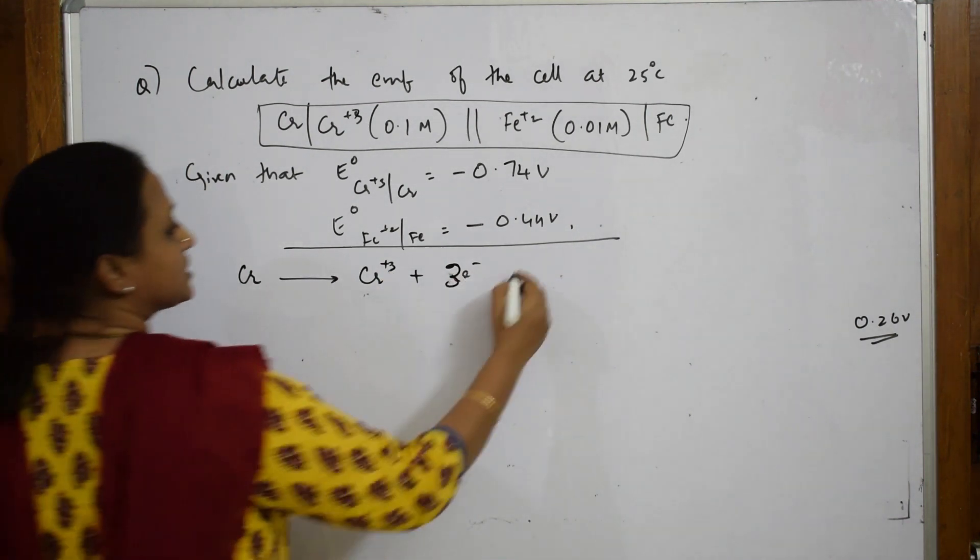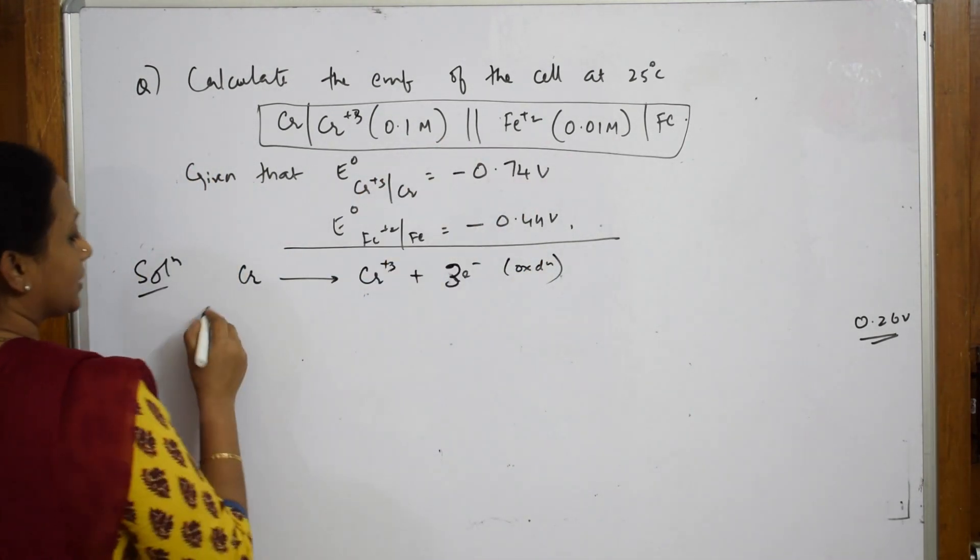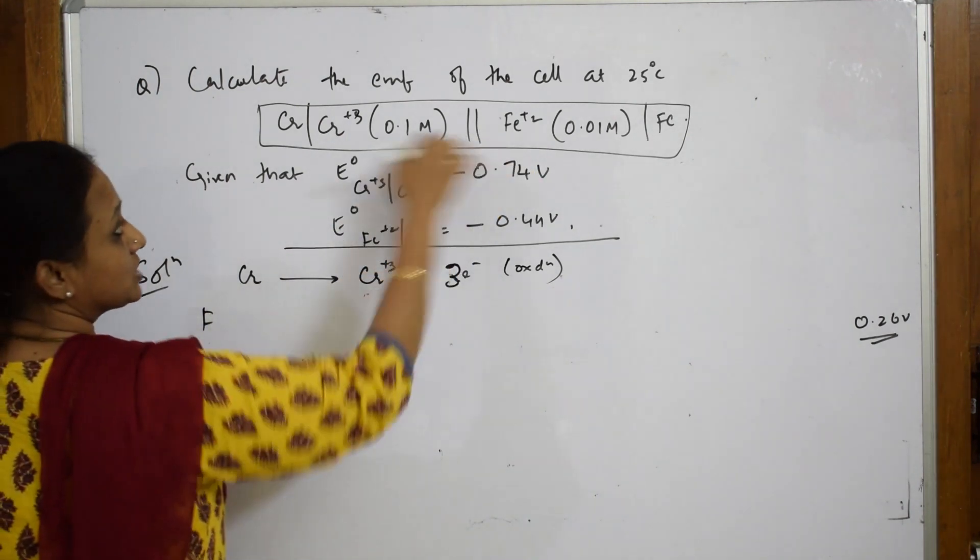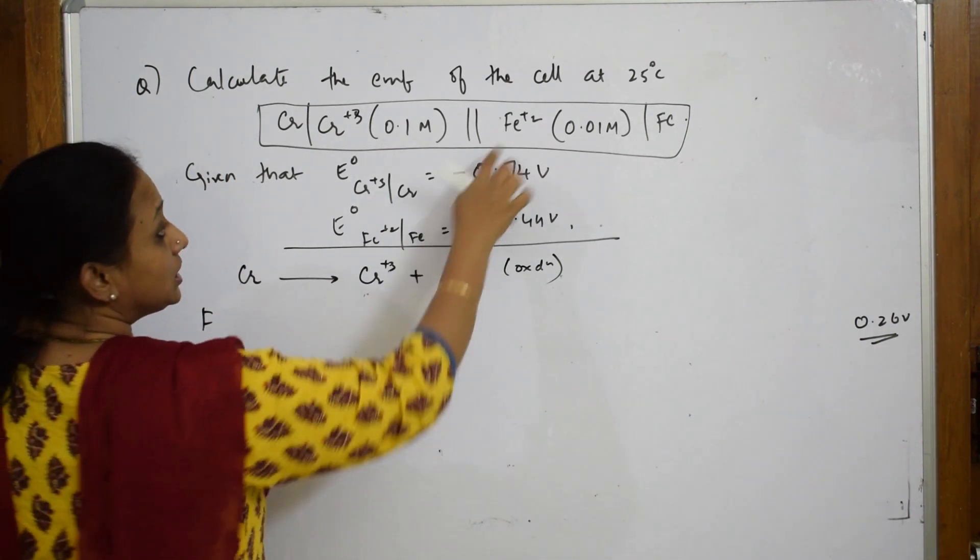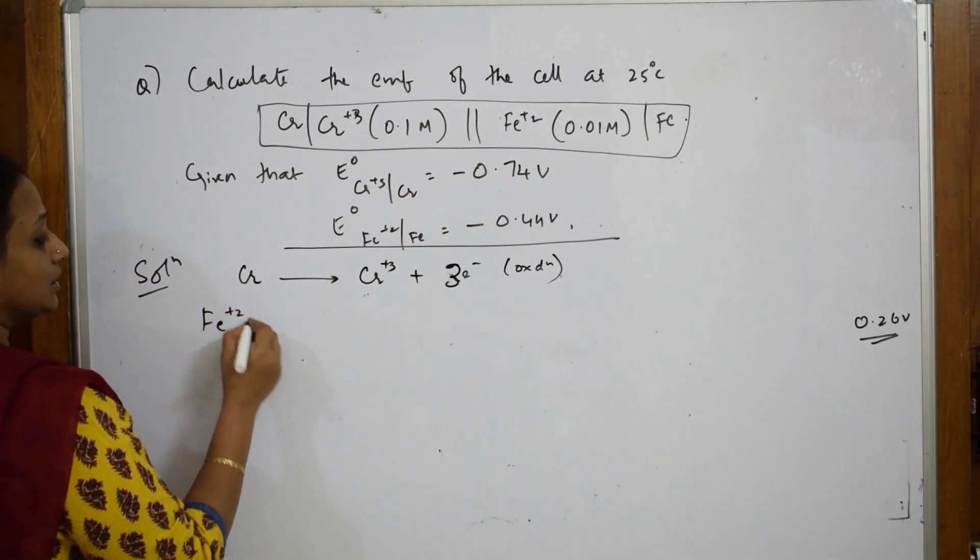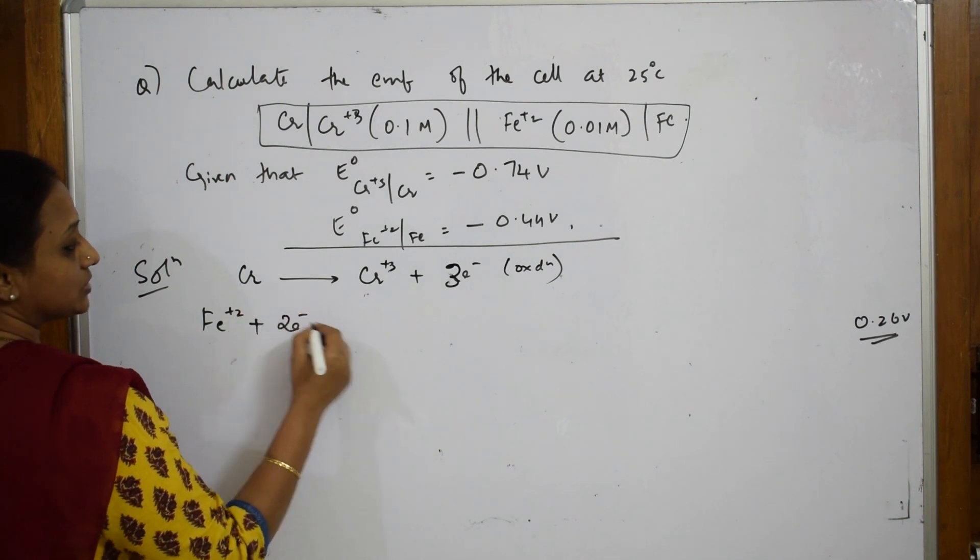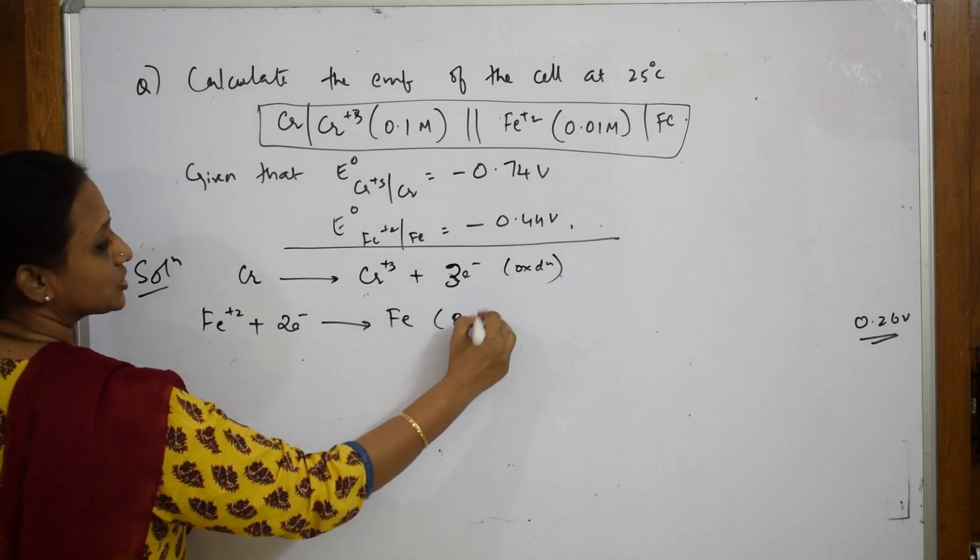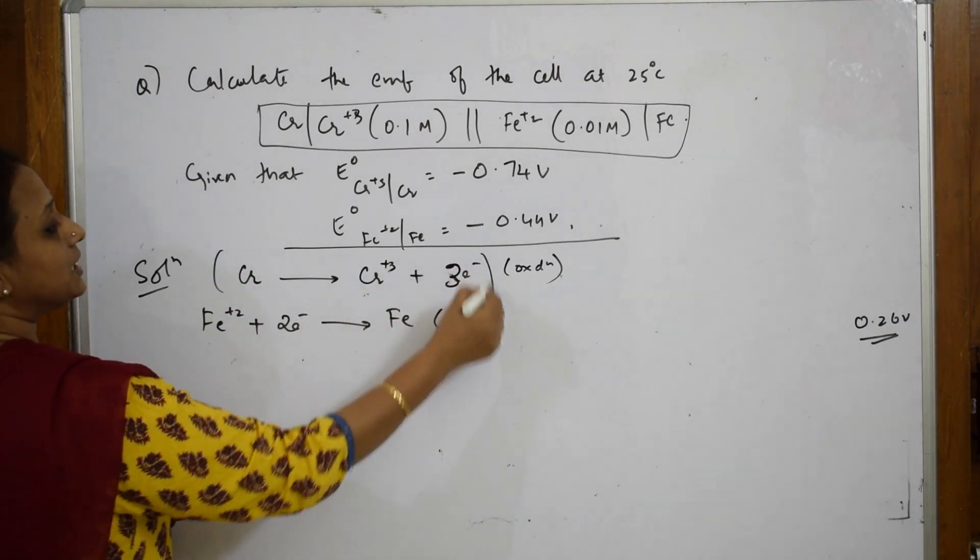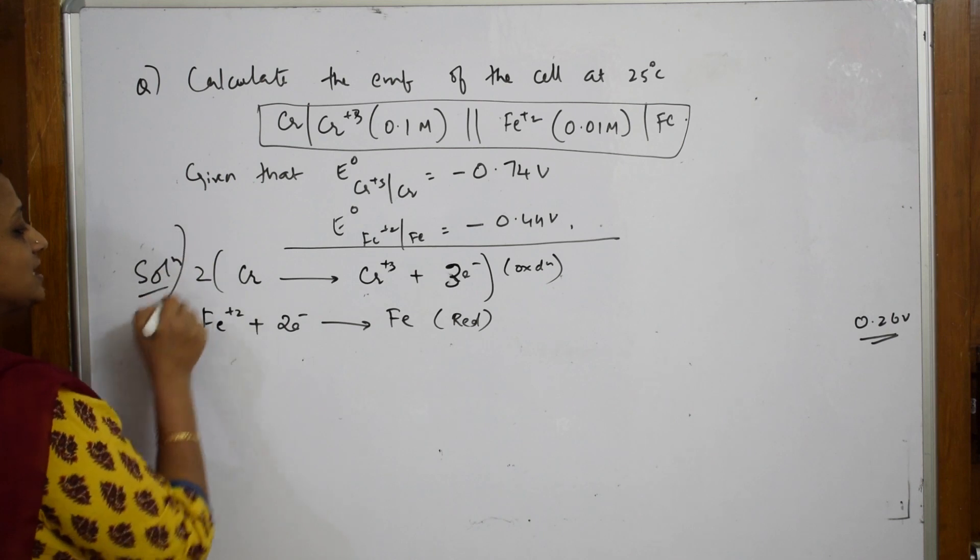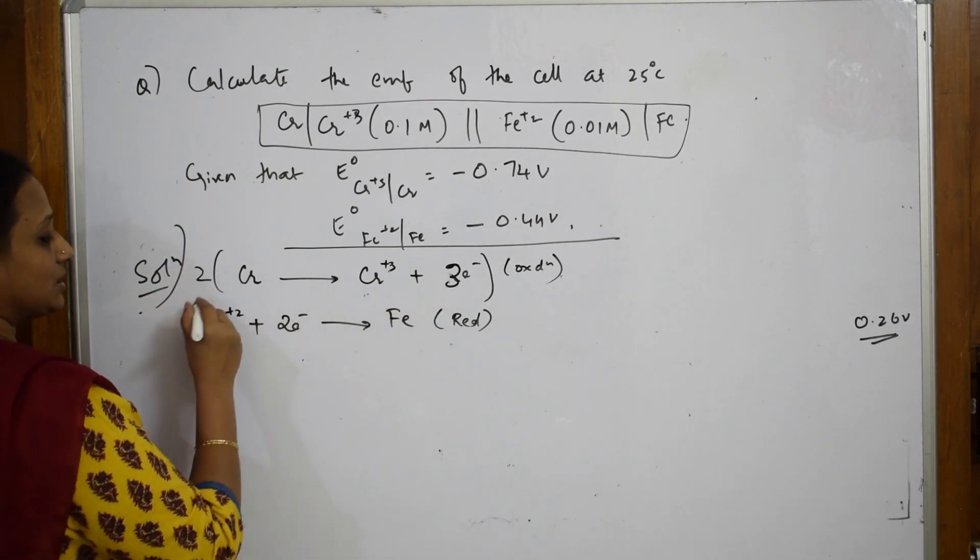Now for iron: Fe²⁺ + e⁻ → Fe. Three electrons transfer at the anode, but Fe²⁺ requires only two electrons, so Fe²⁺ + 2e⁻ → Fe. This is your reduction. Now balance the electrons by multiplying this by 2 and this by 3 to cancel the electrons.